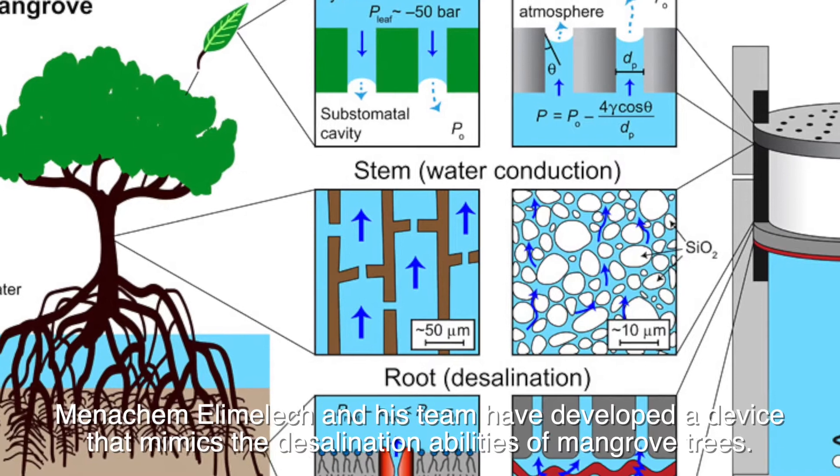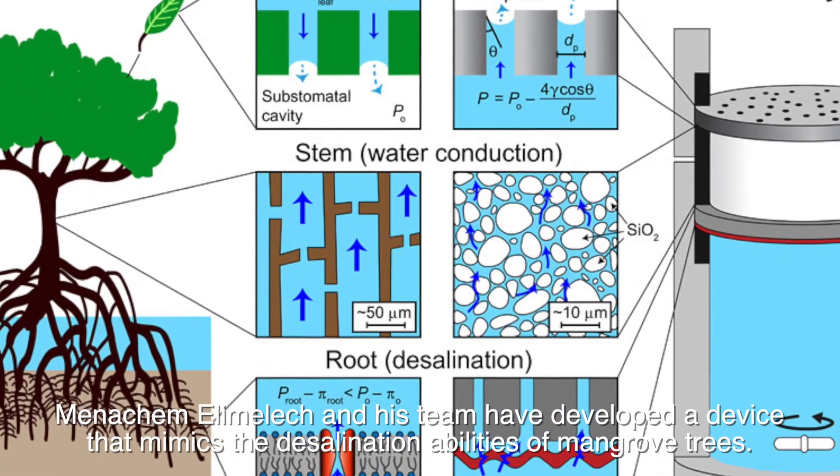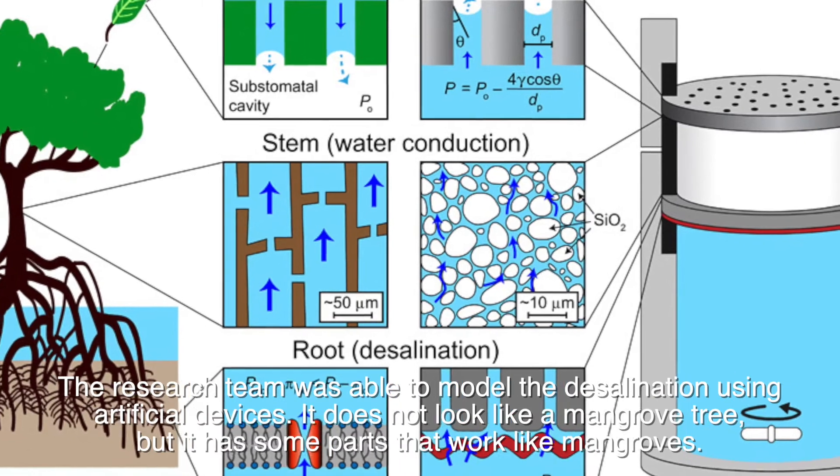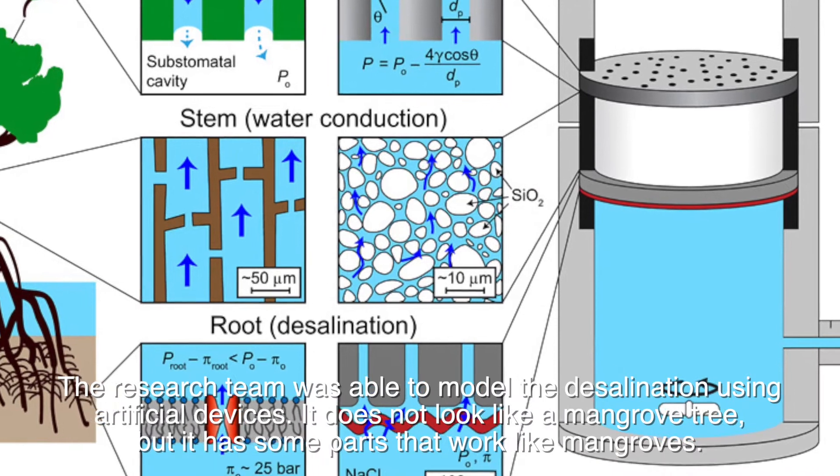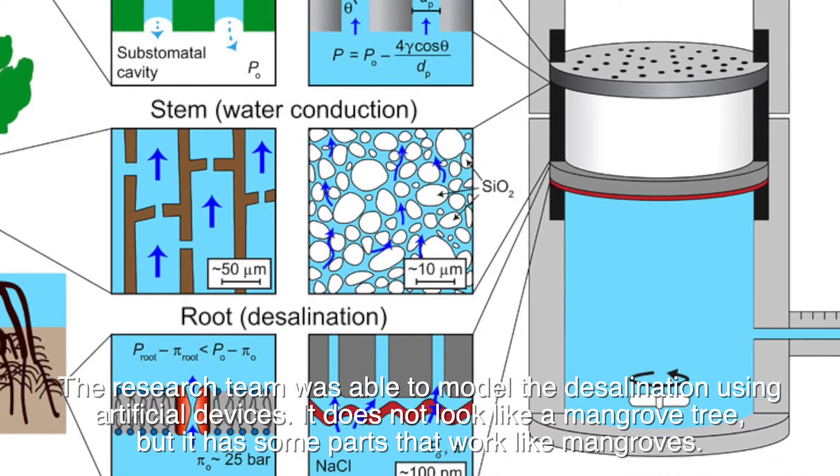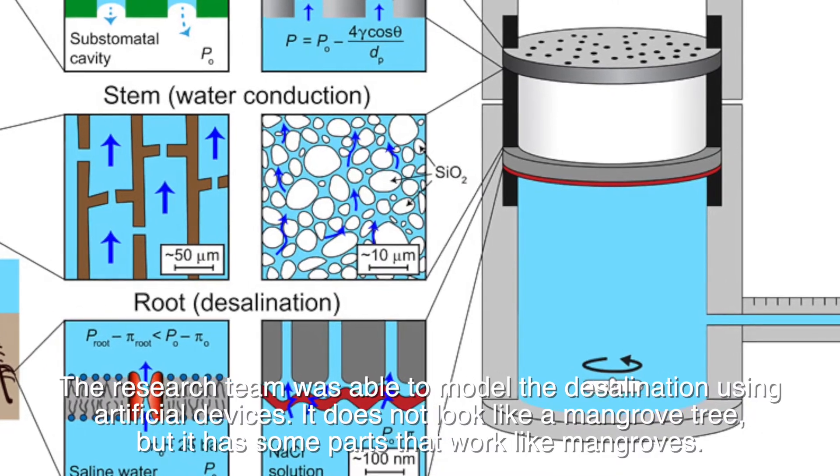The research team was able to model the desalination using artificial devices. It does not look like a mangrove tree, but it has some parts that work like mangroves.